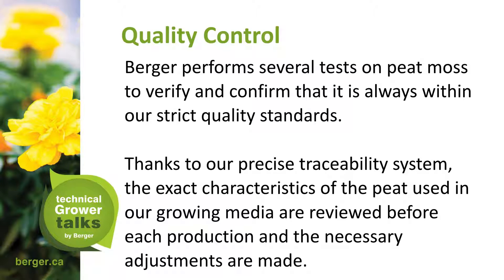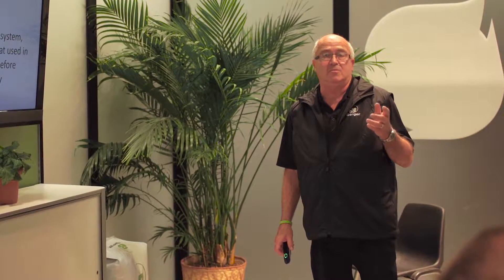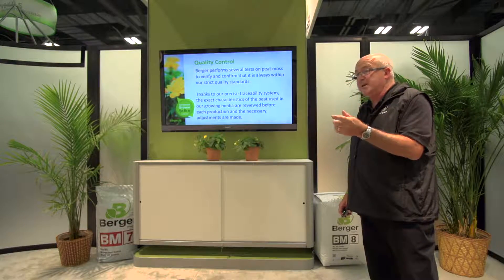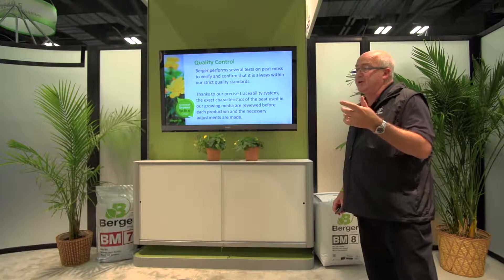Berger performs several tests on peat moss to verify it's within strict quality standards. Thanks to a precise traceability system, the exact characteristics of the peat used in growing media are reviewed before each production and necessary adjustments are made. Every bag has a large barcode telling us the day it was harvested, how many days the peat was stored, what date it went into production, and all quality control data.